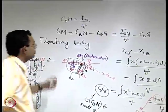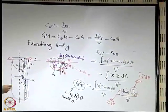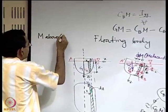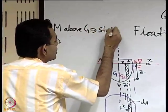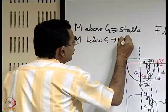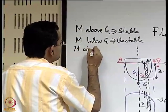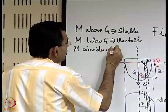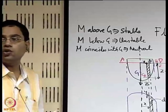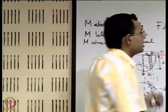Let us summarize the stability criteria: if M is above G, the body is stable; if M is below G, it is unstable; and if M coincides with G, it is neutral. The metacenter M plays the equivalent role of the centre of buoyancy for a totally submerged body, but it is not exactly the centre of buoyancy. Let us now illustrate this with an example.